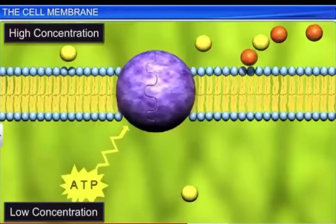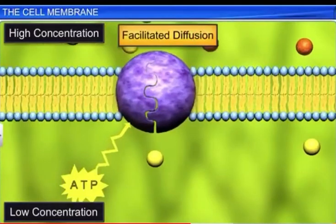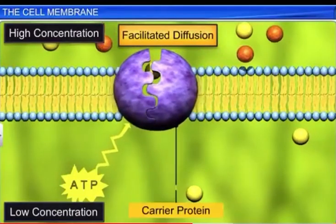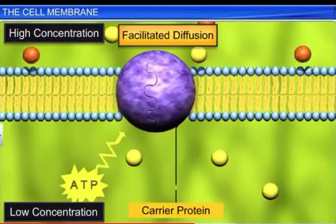Whereas larger molecules, such as glucose, are transported by facilitated diffusion, in which carrier proteins in the membrane change their shape and accelerate the diffusion process.